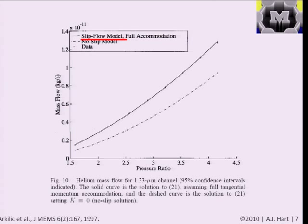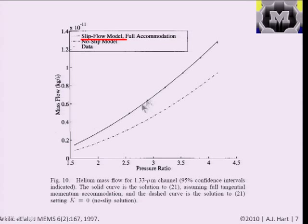They related the pressure difference between the two tanks versus time to the flow rate through the system, based on their knowledge of channel geometry. The plot shows mass flow rate as a function of pressure ratio—the ratio of inlet to outlet pressure. Two curves show the slip flow model and no-slip model predictions from theory, along with their data. Their data agrees very well with the slip flow model, validating both the accuracy of the expression we discussed and the importance of slip effects for these geometries. Depending on conditions, ignoring slip gives errors of a few tens of percent.